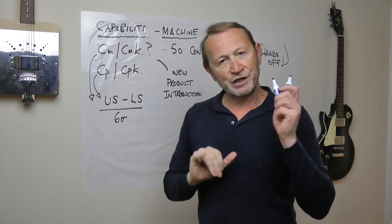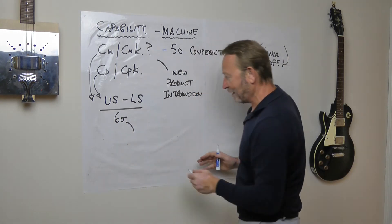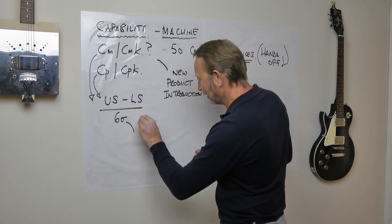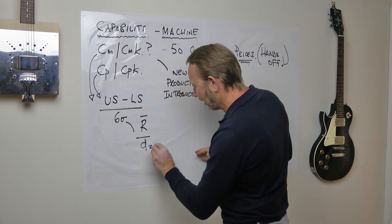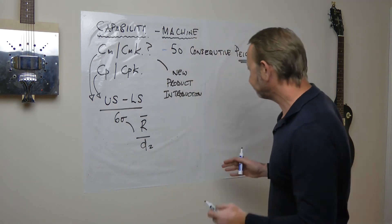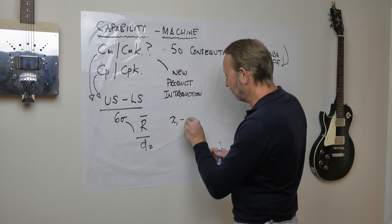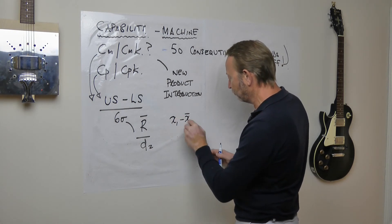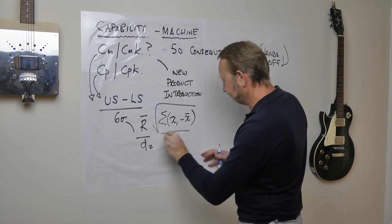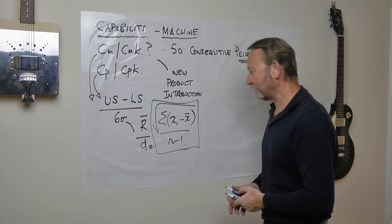The other thing to think about is the sigma calculation. In CPK, the sigma calculation would be the Shewhart calculation, which is R-bar divided by D2. The sigma calculation for CMK, however, uses all the individual data points — it's the full standard deviation calculation.